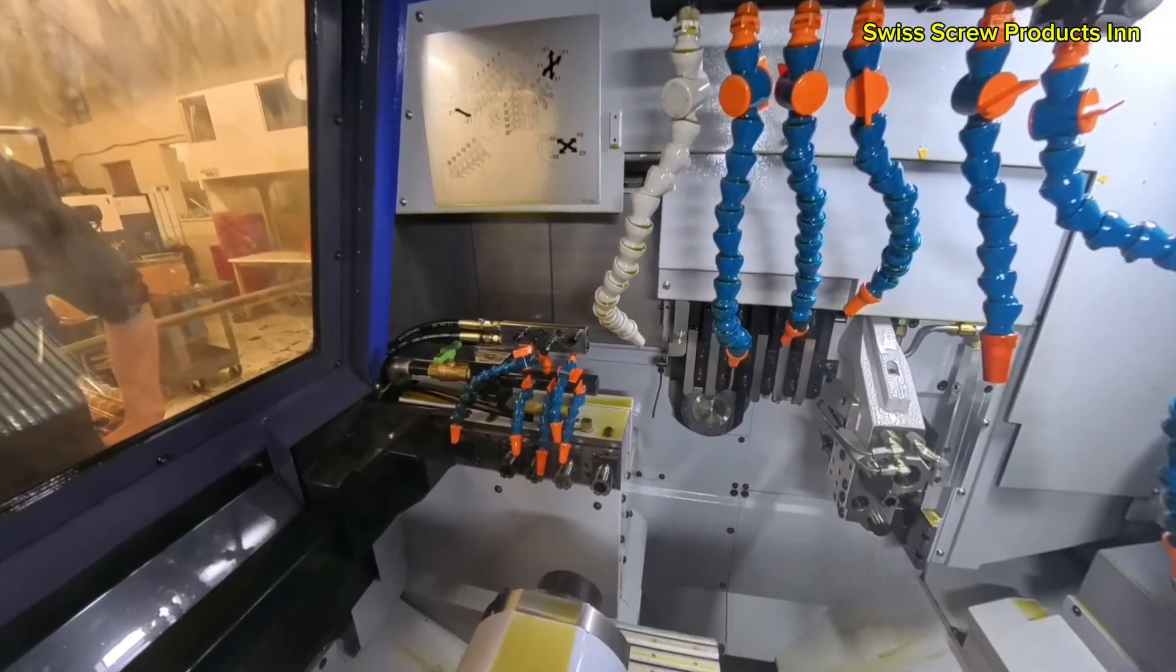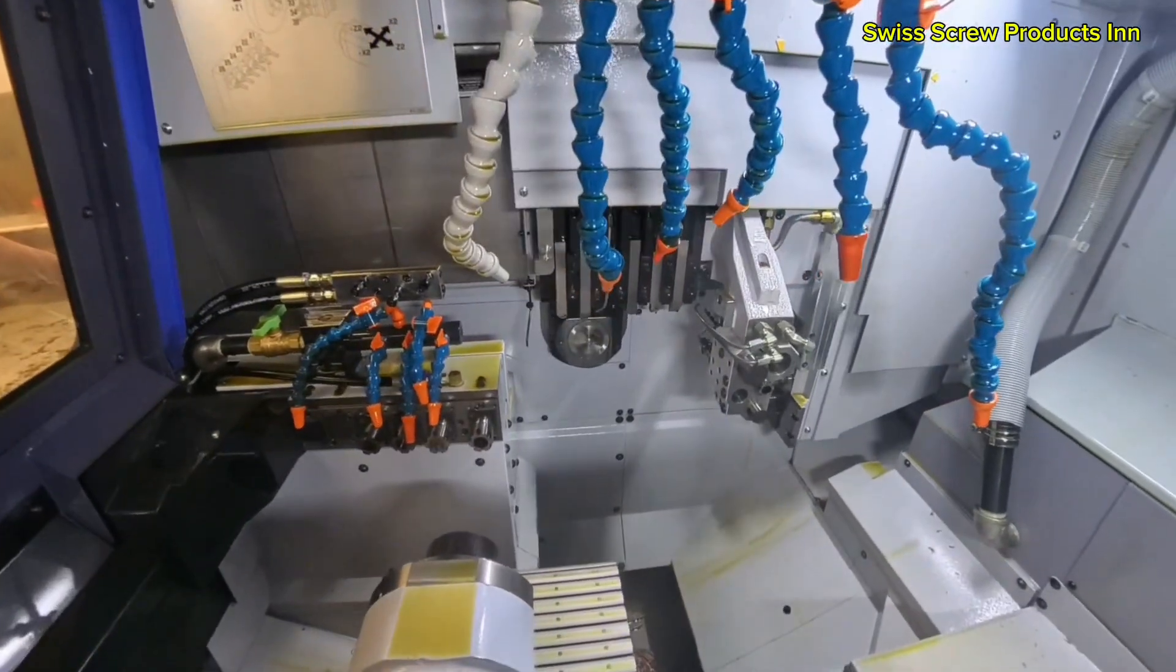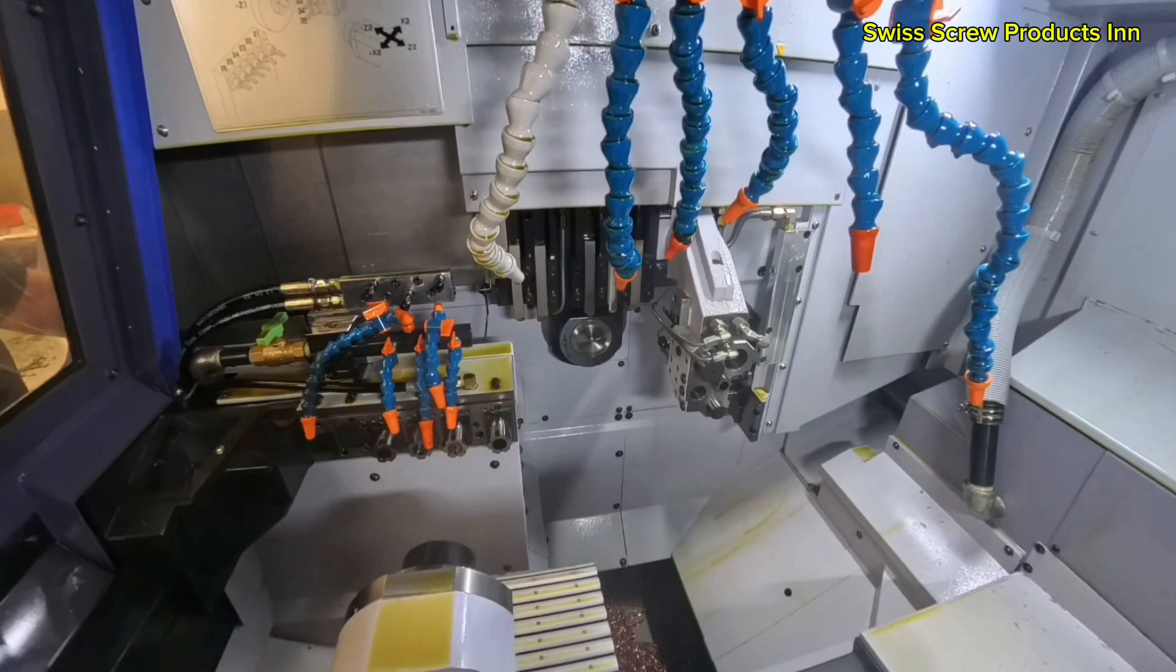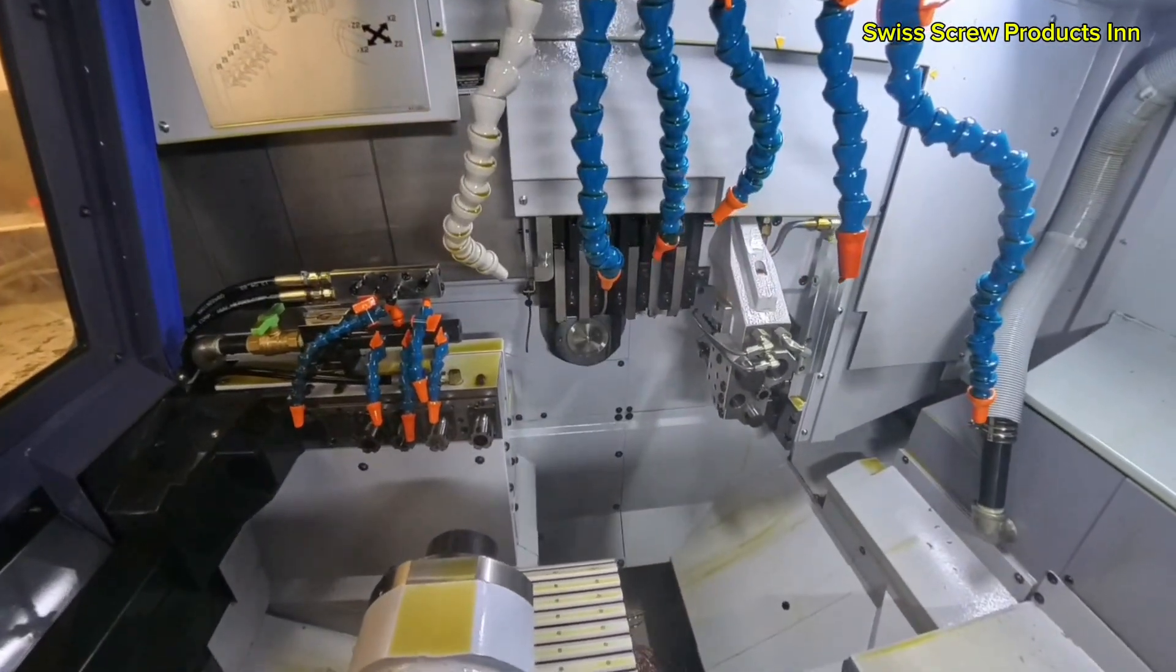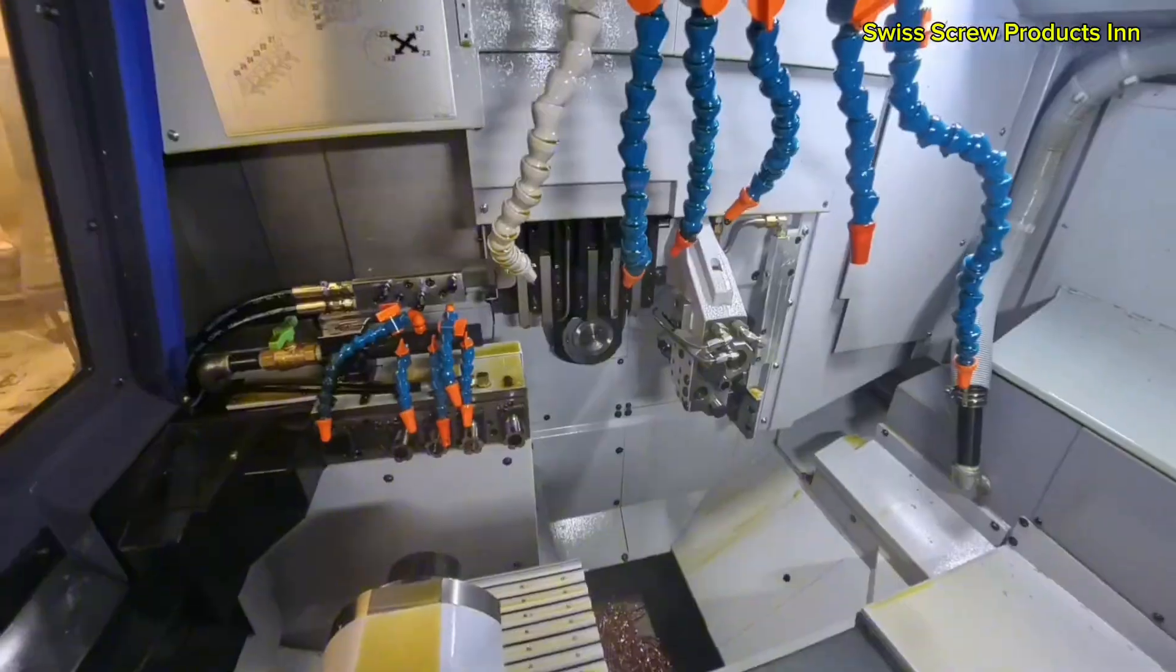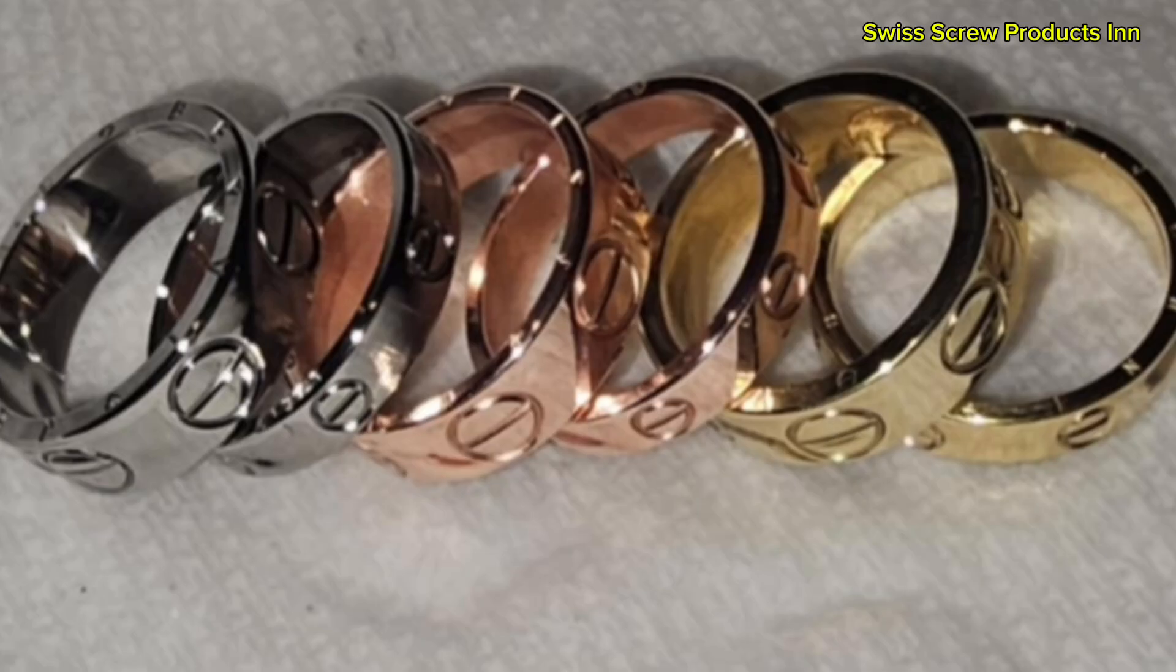In today's video, we're diving into one of the most powerful machines in modern precision manufacturing. It is the CNC Swiss screw machine. I'm going to show you how it works, what it makes, and why it's trusted in industries where there's no room for mistakes. So grab your favorite tool, get ready to learn something new, and let's break it down.